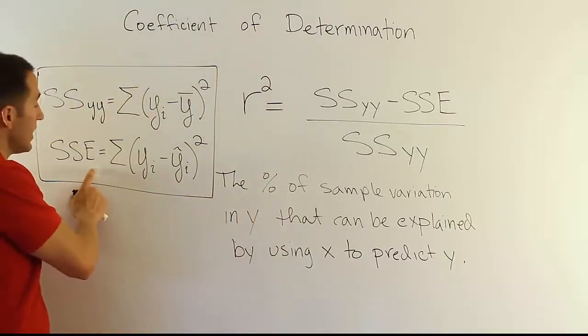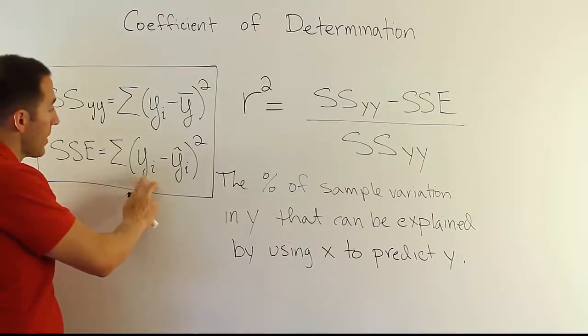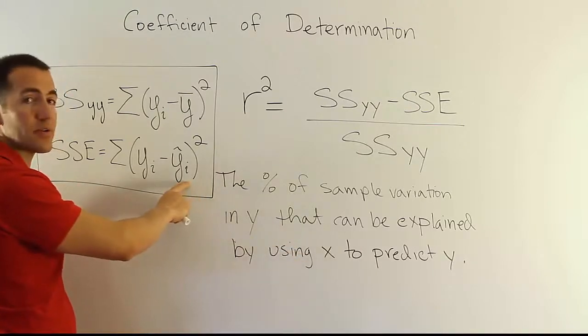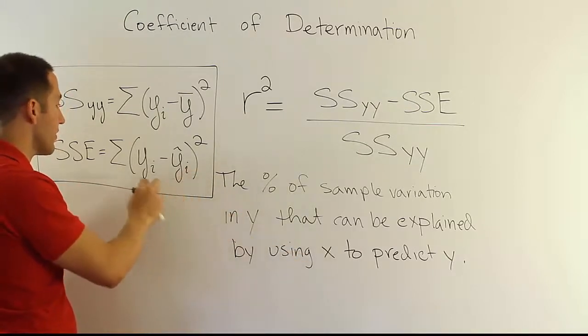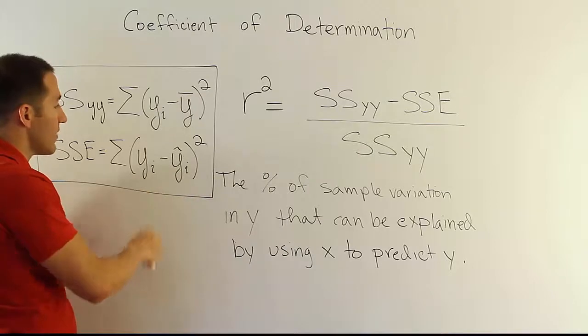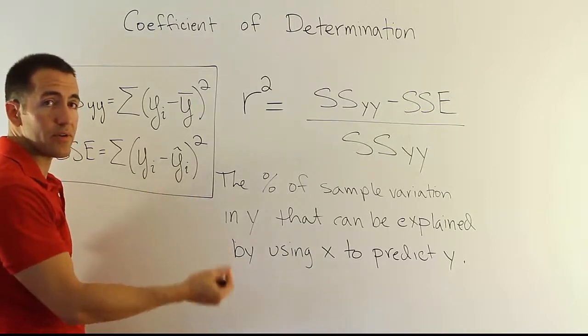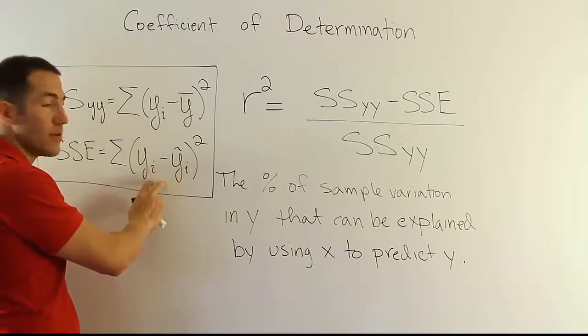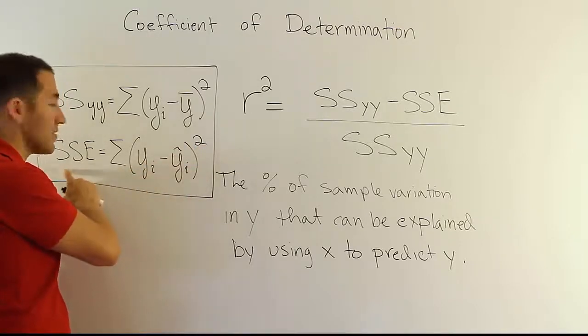Now, for the sum of squares for error, it's a little bit different. It's the individual y values, once again, minus the predicted y value when using x as a predictor to predict y. So in your model, for every individual observed y value, you can plug in an x value into your equation and get a predicted y value. You subtract those two, that gives you your error. If you square it and add it up, that's the sum of squares for error.